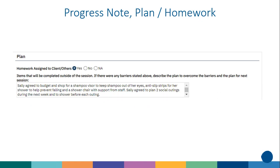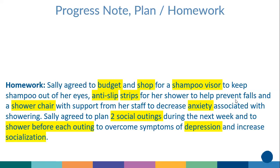For the plan, we want to know not only what people are working on between this session and the next, but how they're going to accomplish it, when they should be performing those skills, with whom, and how we're going to make sure progress is made. For example: 'Sally agreed to budget and shop for a shampoo visor to keep shampoo out of her eyes, anti-slip strips for the shower to help prevent falls, and a shower chair with support from her staff to decrease anxiety' — linked to her anxiety associated with showering. And: 'Sally agreed to plan two social outings during the next week and to shower before each outing to overcome symptoms of depression and increase socialization.' Very specific — what exactly is she going to do, how, who's going to help, and the rationale.